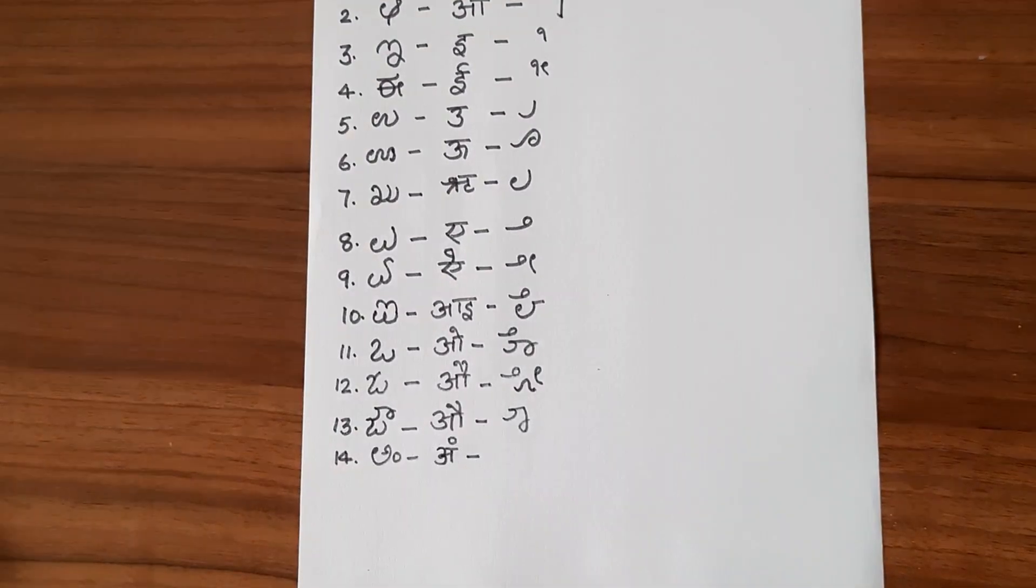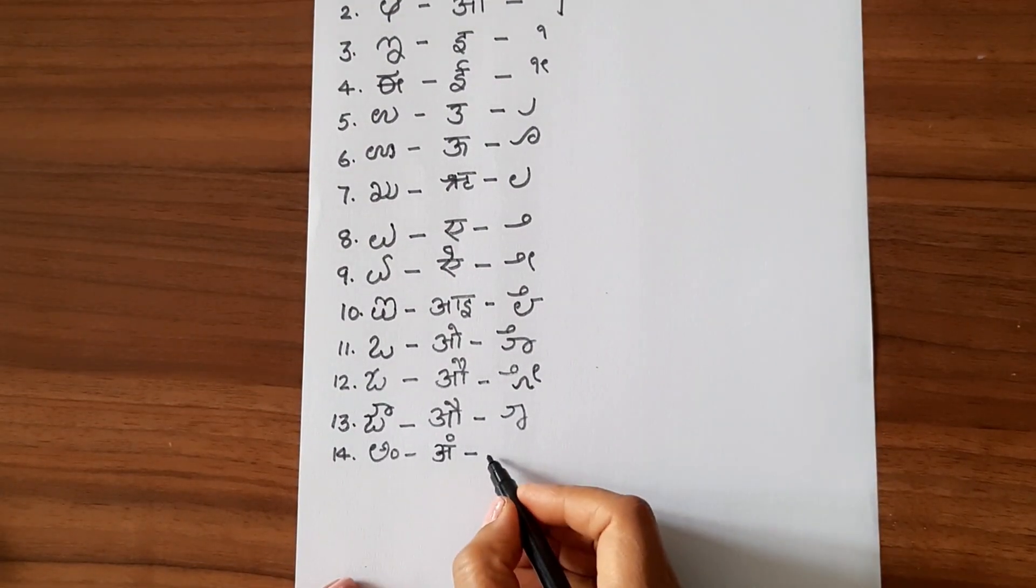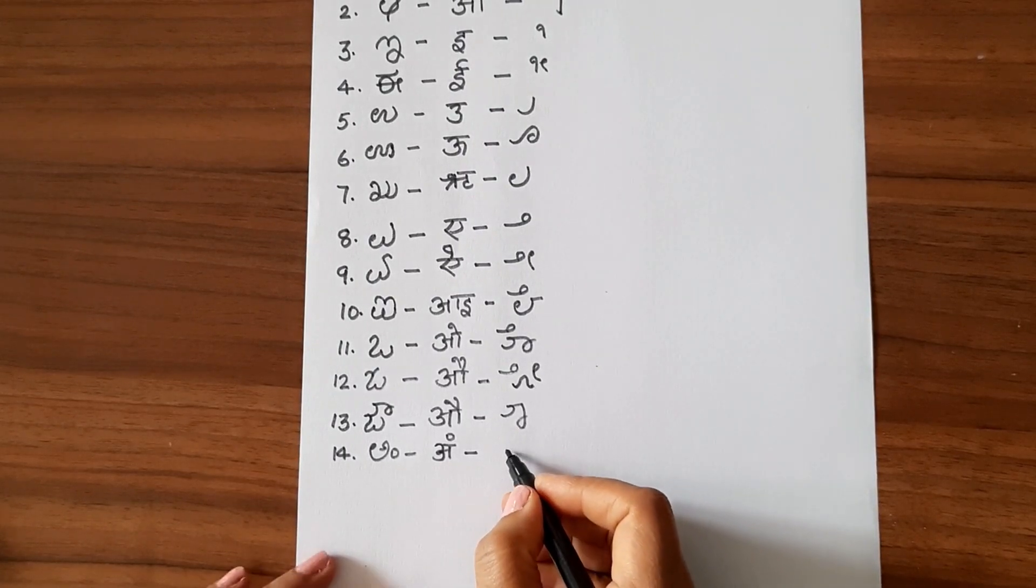And 14th one is Am, and Am ki matra is like a dot.